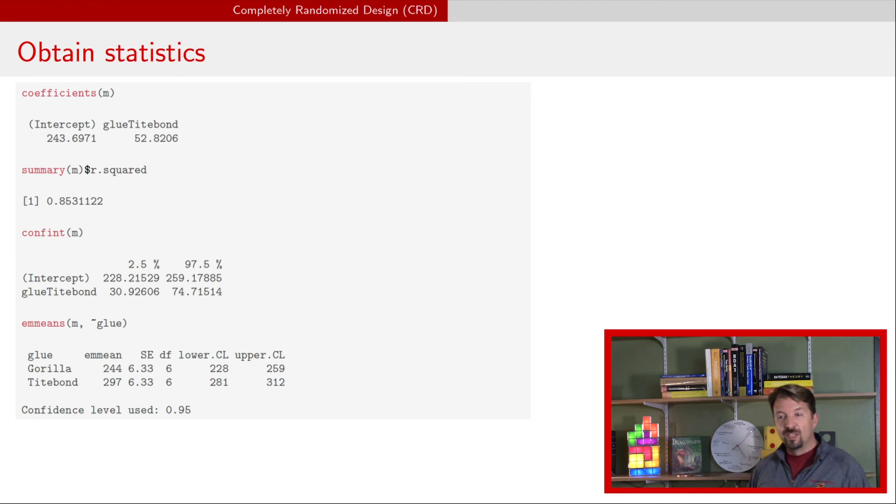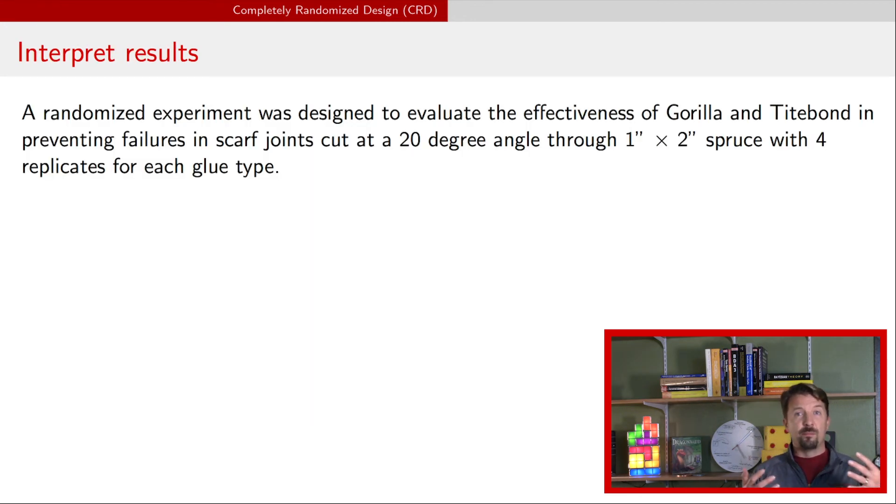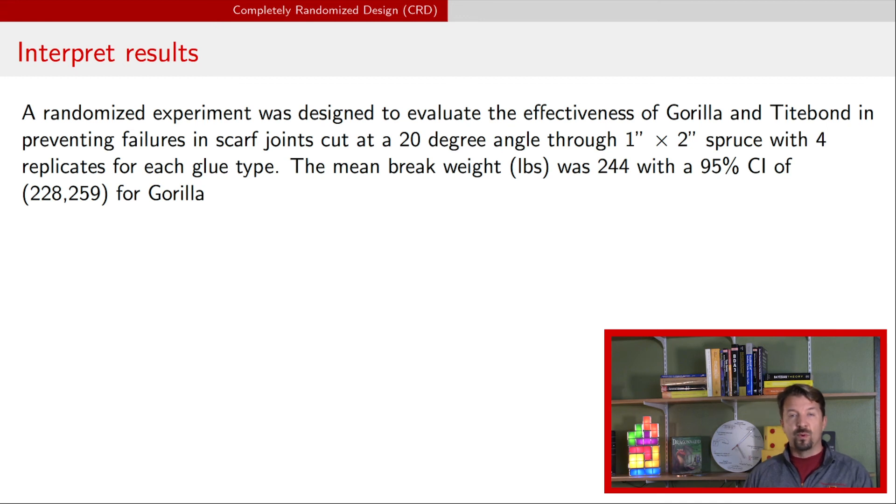Now what you want to do here at the end is to write up a paragraph for a manuscript that describes the results of this experiment and it might look something like this. You might say a randomized experiment that tells the individual who's reading it that you did a randomization was designed to evaluate the effectiveness of Gorilla and Titebond in preventing failures in scarf joints cut at a 20 degree angle through 1 by 2 spruce with 4 replicates of each glue type. That gives a nice succinct understanding of what was going on in this experiment. According to the analysis the mean break weight was 244 with a 95% confidence and credibility interval of 228 to 259 for Gorilla and 297 with an uncertainty interval of 281 to 312 for Titebond. That very succinctly gives somebody who's reading your study an understanding of how strong these joints are when using Titebond and when using Gorilla.